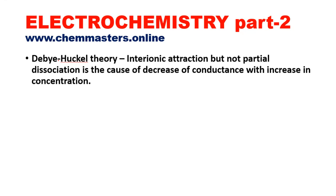According to Debye-Hückel theory, interionic attraction — and not partial dissociation — is the cause of the decrease of conductance with increase in concentration. By increasing the concentration of the electrolyte in a medium, we see a decrease in conductance. According to Arrhenius theory, the explanation was based on partial dissociation causing the decrease in conductance. But that is absolutely wrong. According to Debye-Hückel theory, the decrease in conductance with increasing concentration is due to interionic attraction.